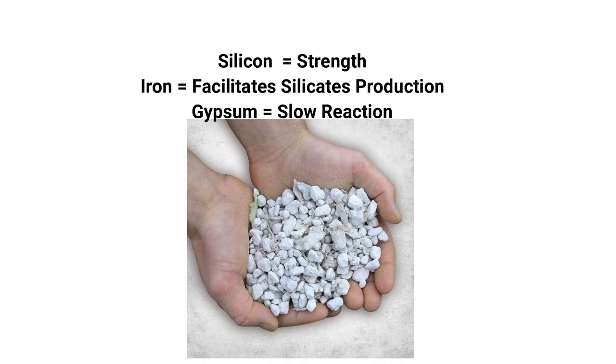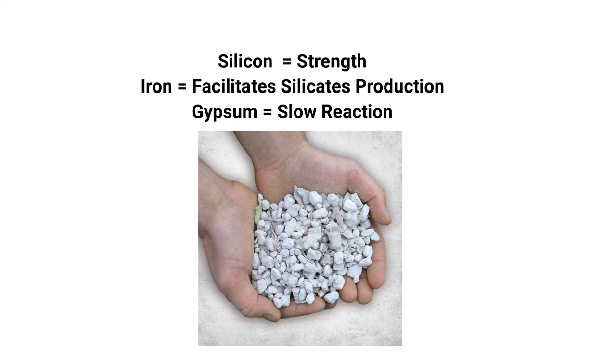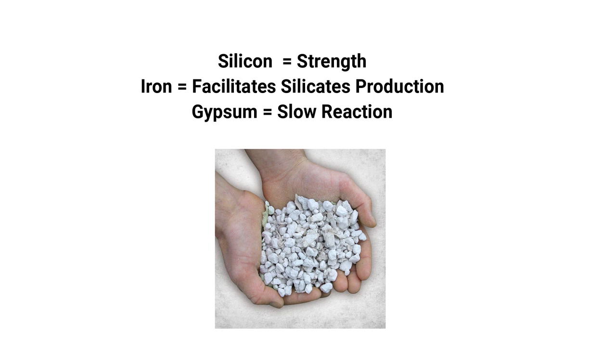Gypsum is used mainly to slow the reaction when cement reacts with water. When we mix cement with water, it hardens within a few hours, and this is important to ensure that we have adequate time for casting the concrete. If we do not use gypsum, this hydrated cement will become like a rock in a shorter time.